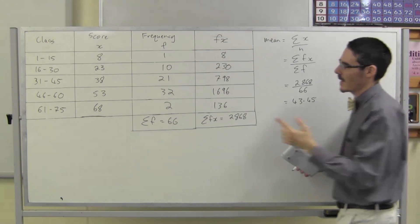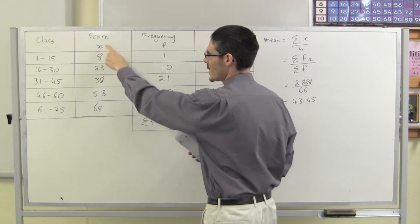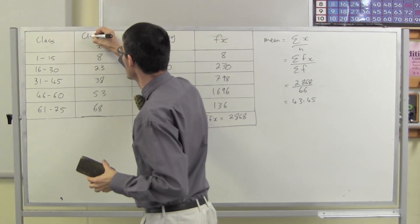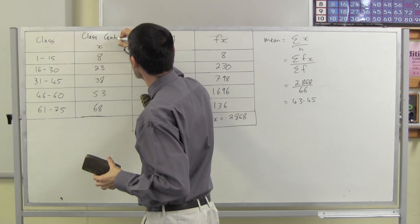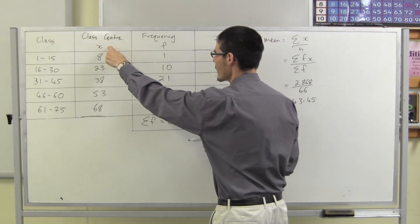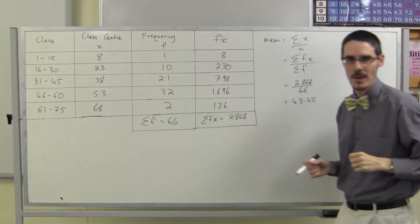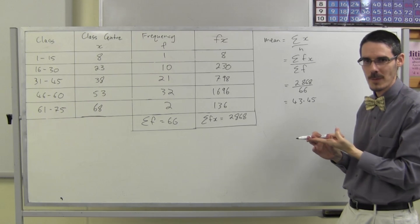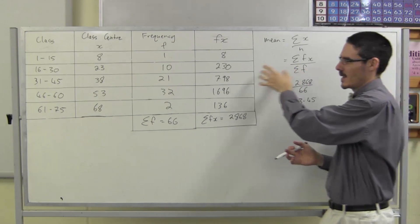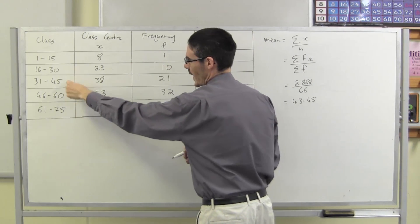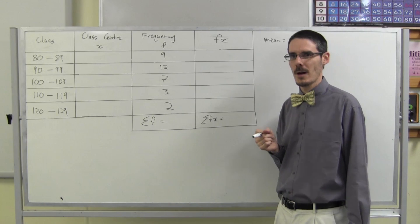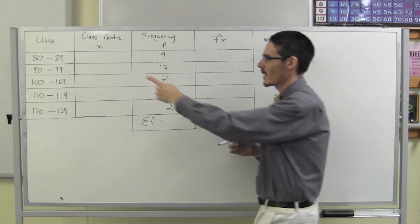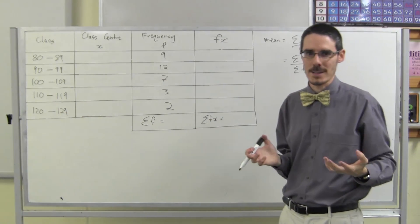And that's it. You just have to work out the centre of the class to be your score — the centre of each class. Some people write 'class centre' rather than 'score.' It's the same thing. That's our x value which we multiply by the frequency. So the mode and the median are done the same way as before — it's just that you're going to get a class for an answer instead of a single score.